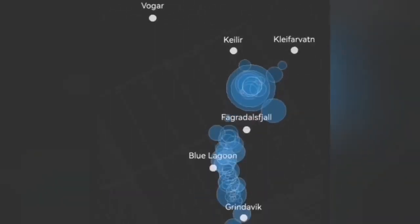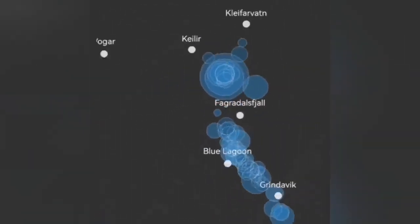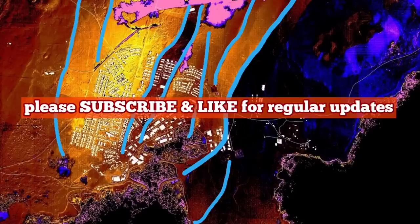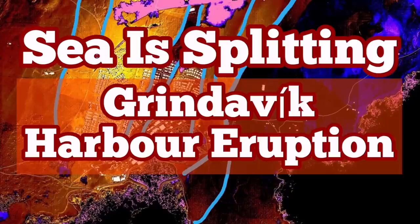Near the Svartsengi, we don't have Sundhnuka, we have something, and now off the coast of the Grindavik, in the ocean, we see the rising of the earthquakes, means the magma is rising with it.